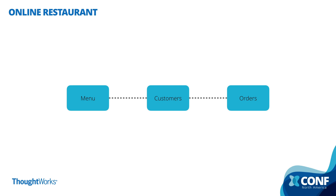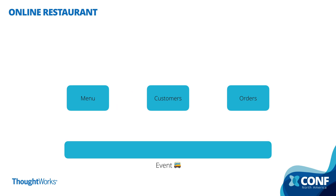Because you want an event-driven architecture, we don't want those services to communicate with each other directly anymore. Instead, we're going to have an infrastructure component, usually called an event bus, which is responsible for exchanging messages between the services.